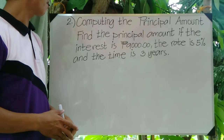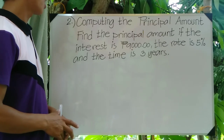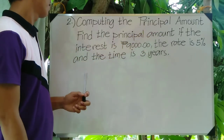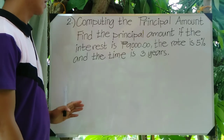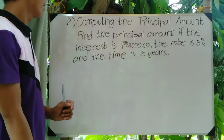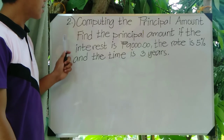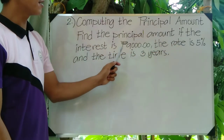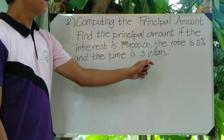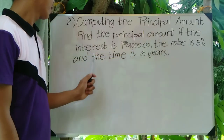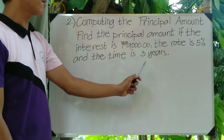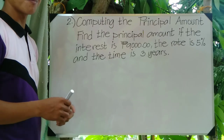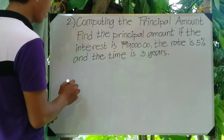In problem number two, we are going to find the principal amount. The problem is: find the principal amount if the interest is 9,000 pesos, the rate is 5%, and the time is 3 years. We will use the same formula: I equals P times R times T.